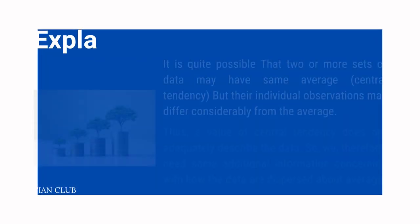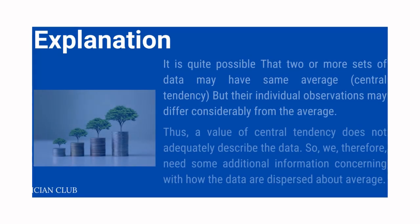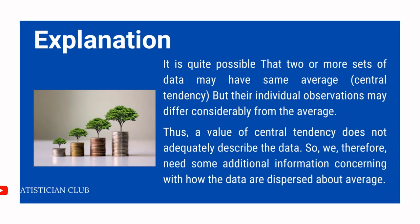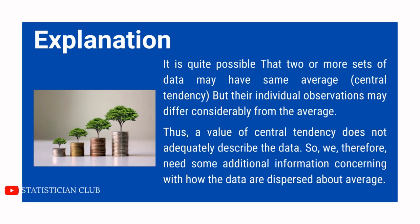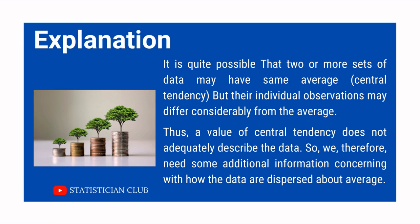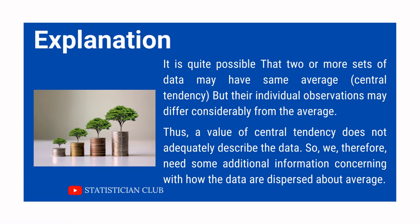Here is the explanation. It is quite possible that two or more data sets have the same average, but the individual observations may vary considerably from each other. So central tendency does not tell everything about the data — it tells only a single value, which is called the average.